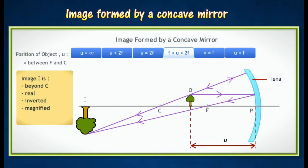When the object is placed in between C and F, the image will appear beyond C. The image formed is real, inverted and magnified.